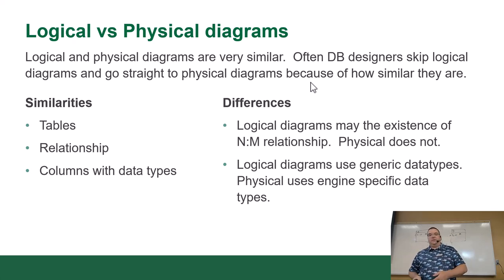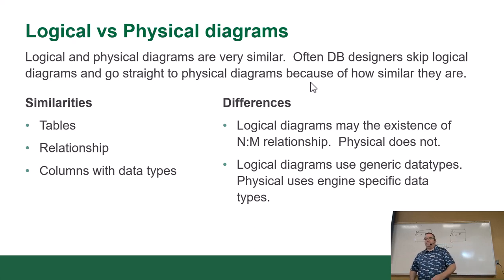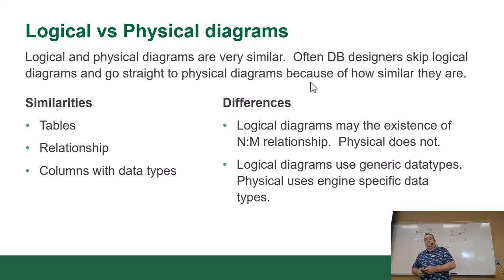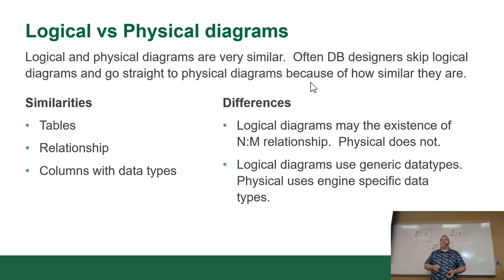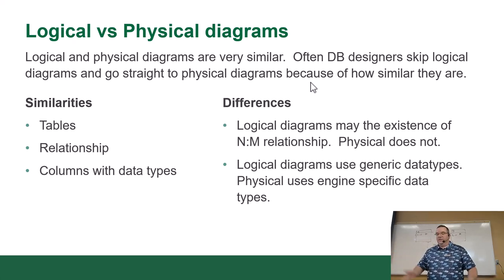Similarities: they have tables, relationships, columns, and data types — it's a database diagram. However, some logical diagrams may allow the existence of many-to-many relationships depending on what software you're using. I usually tend to go with the side that they don't allow it unless the software does. Physical diagrams do not allow many-to-many — you just can't do it.